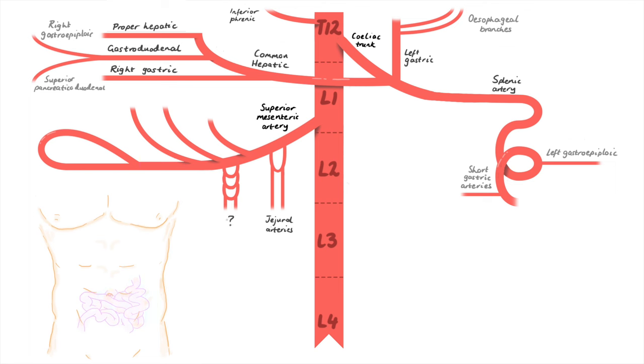Next, with many arcades and short vasa recta, we have the ileal arteries. We then have one branch that goes up and finishes the work of the common hepatic. This is the inferior pancreaticoduodenal. Next, the first two parts of the large intestine are supplied. We have the middle colic and right colic arteries. The superior mesenteric artery is a loop, and the loop is completed by the arteries supplying the stuff in the lower right corner of the abdomen. This is the ileocolic artery.